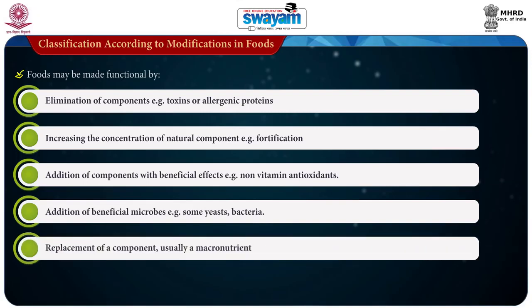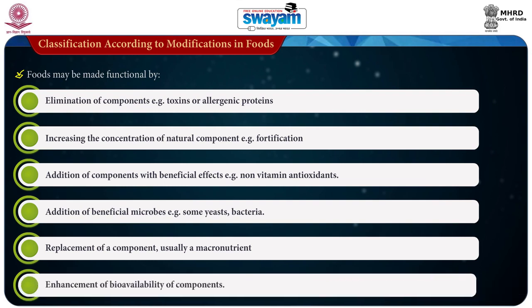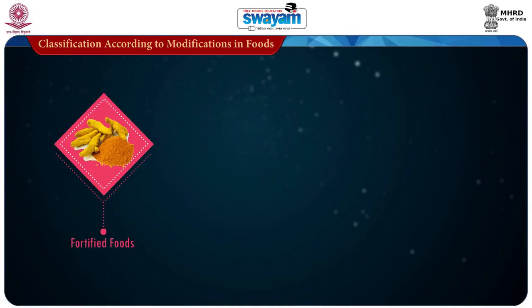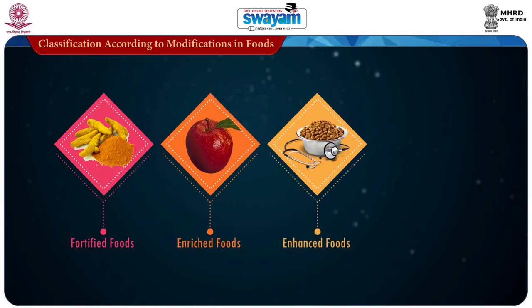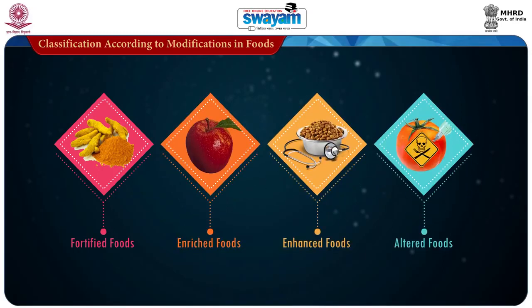Fifth, replacement of a component — usually a macronutrient — for example fat replaced with modified or emulsified carbohydrates. Sixth, enhancement of bioavailability of components. According to modifications, the foods are classified as fortified foods, enriched foods, enhanced foods and altered foods.